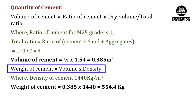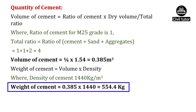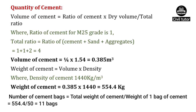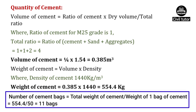Weight of cement equals volume of cement into density of cement, where density of cement is 1,440 kg per meter cube. Substituting, weight of cement equals 0.385 into 1,440, which equals 554.4 kg. Since the weight of one bag of cement is 50 kg, the number of cement bags required equals 554.4 divided by 50, which equals 11 bags.